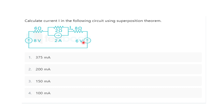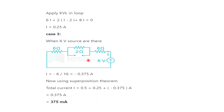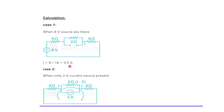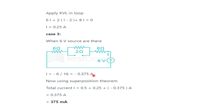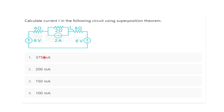In Case 3, considering the remaining voltage source alone: the current source is open circuited and the first voltage source is short circuited. The current flows toward the voltage source, so I₃ = −6/16 = −0.375 A. Using the superposition theorem, total current I = I₁ + I₂ + I₃ = 0.5 + 0.25 − 0.375 = 0.375 A, which is 375 mA. The correct option is 375 mA.